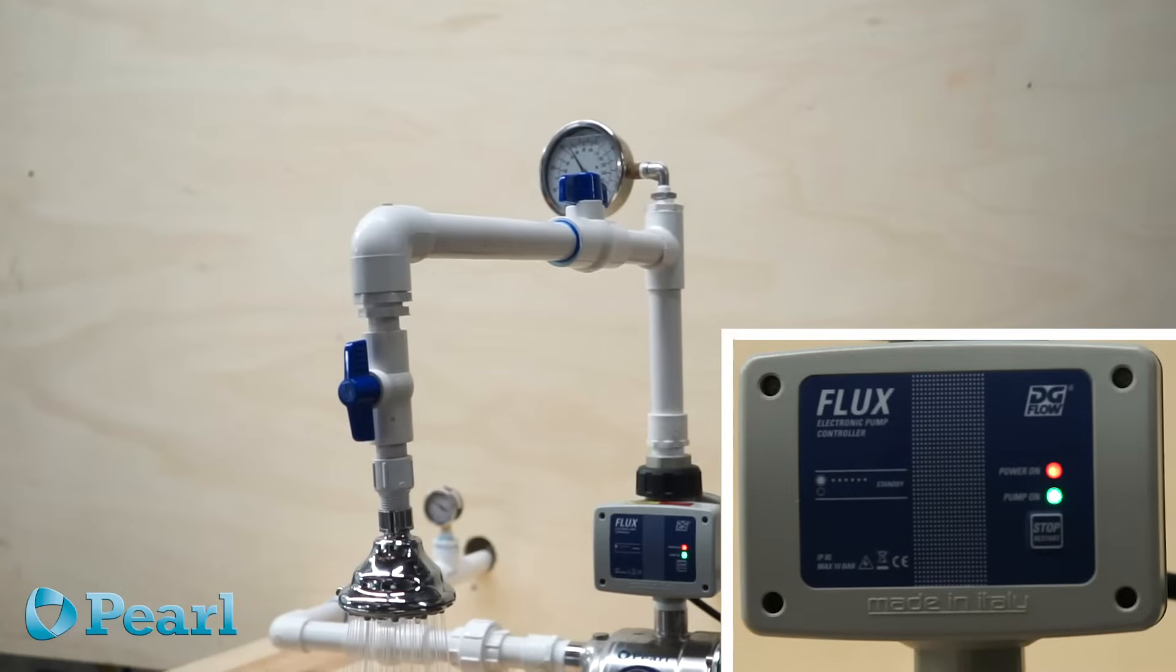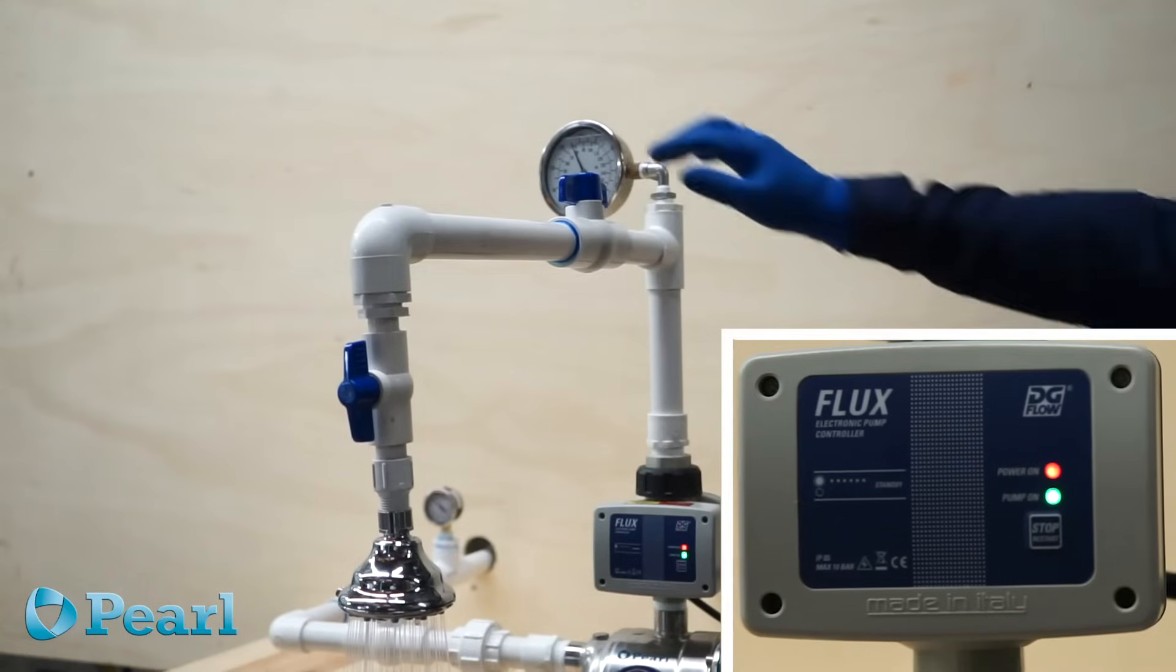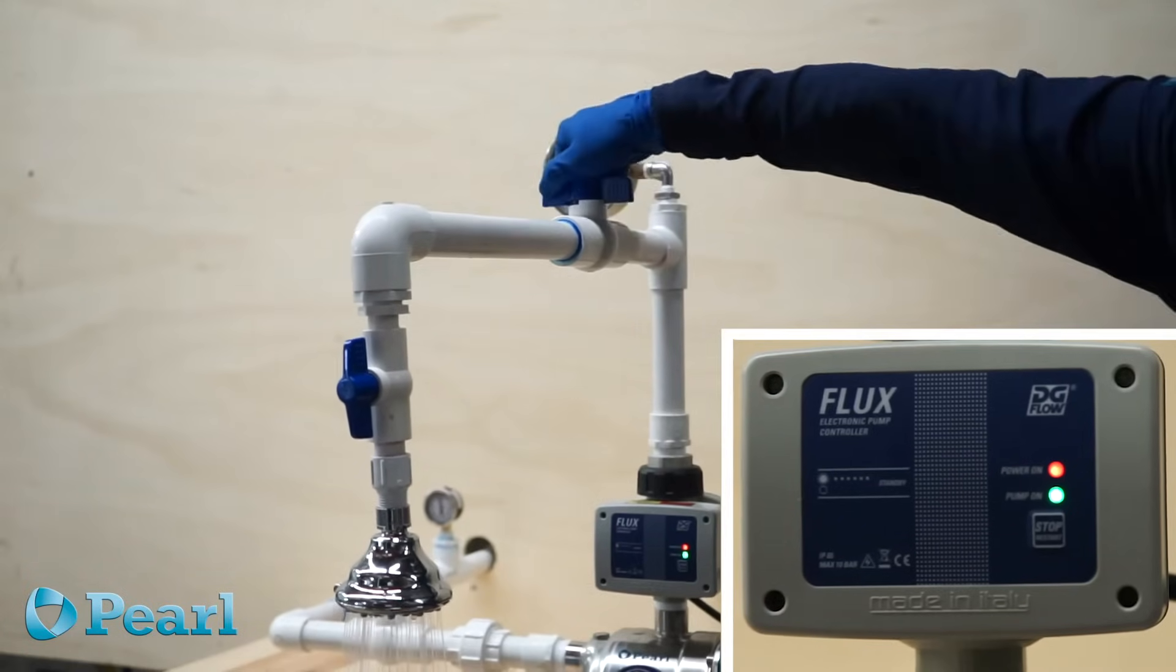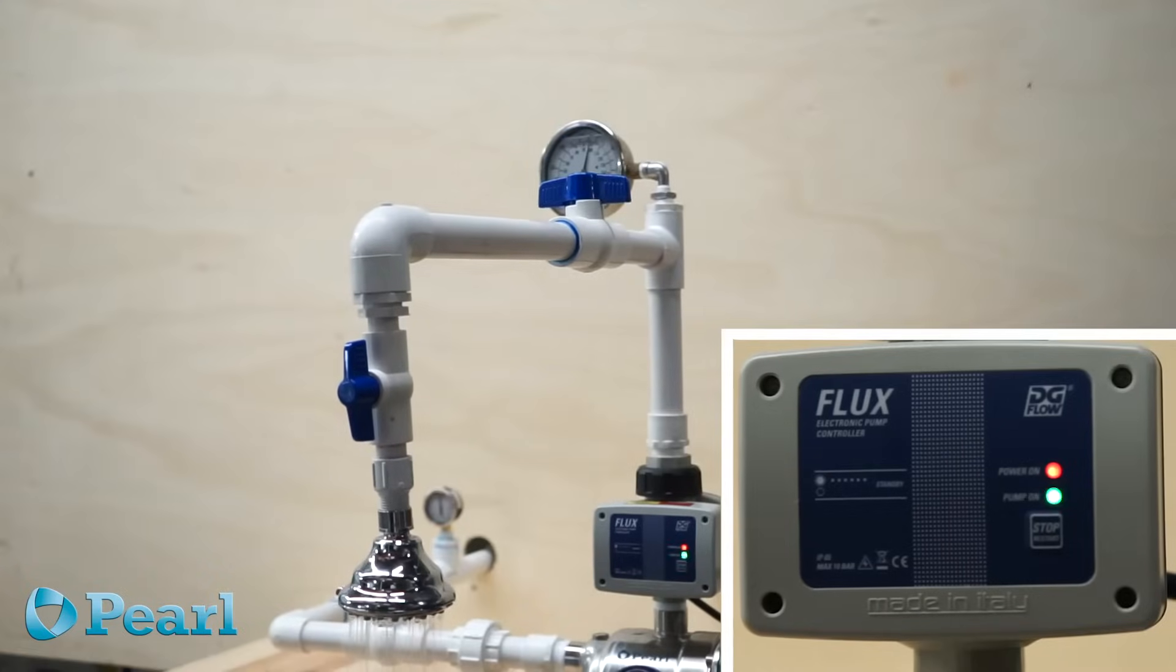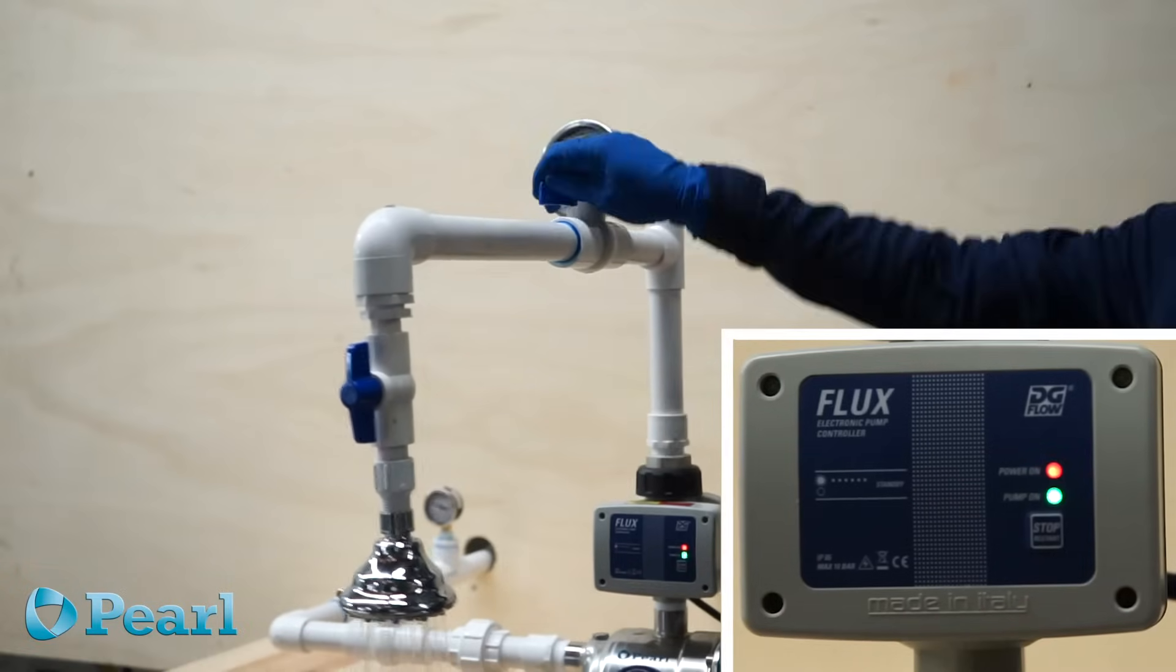If there is a tap or faucet open and the system is working, then the pump should turn off just a few seconds after you close the ball valve. If this happens, the flux system is working perfectly, which means there may be a leak elsewhere in the installation.